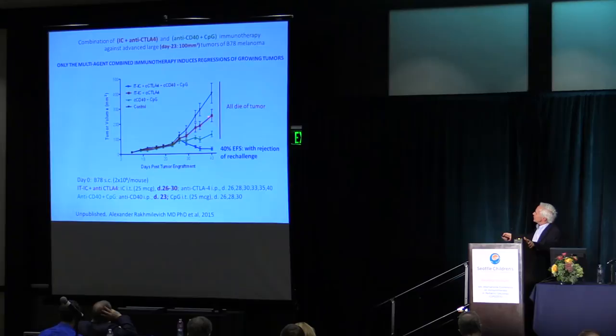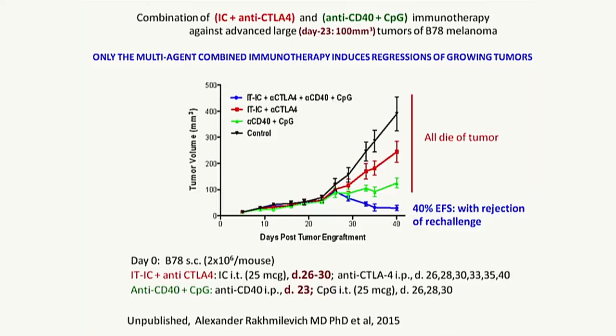Sasha has been interested in macrophage activation and has been looking at combining an anti-CD40 agonist antibody — used to treat adults with pancreatic cancer by Bob Vonderheide at Penn — with a TLR agonist. Treating the B78 tumor on day 23, immunocytokine plus anti-CTLA-4 slowed tumor but tumors were still growing, and anti-CD40 plus TLR agonist similarly only slowed growth. But combining all four treatments together caused these macroscopic tumors to shrink, with a fraction remaining tumor-free and developing lasting adaptive tumor-specific immunity.